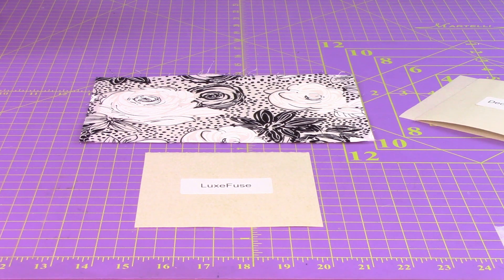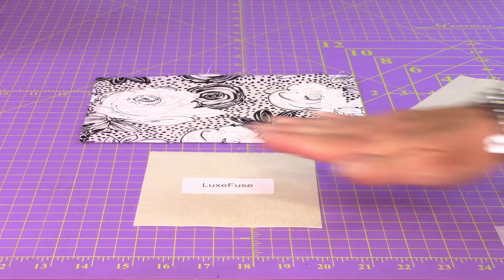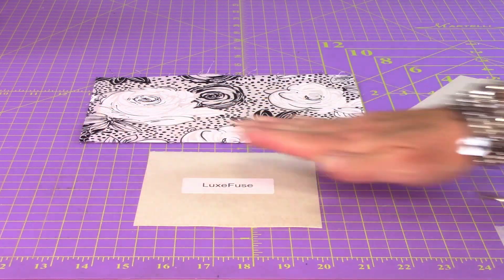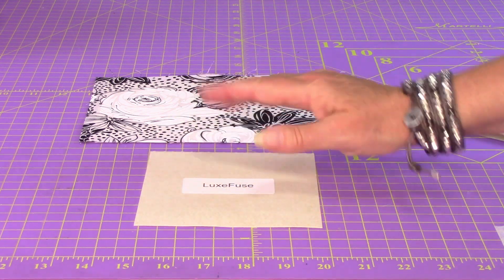So 265 to 320 as far as your heat on your heat press. You need to press it, not iron. We talk about this a lot. Press. If you're ironing, you're sliding it around. Press, lift, press, lift.